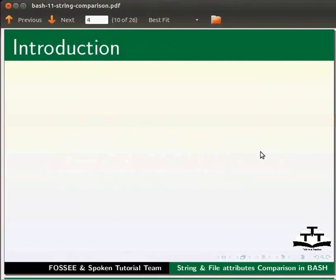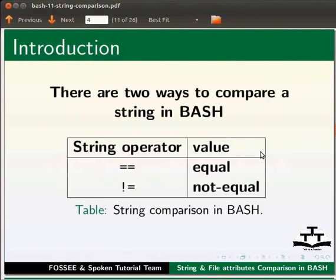Let us start with an introduction. There are two ways to compare a string in bash. First, using the equal-to equal-to operator to compare two equal strings. And second, the not-equal-to operator to compare two not-equal strings. Let us look at an example.